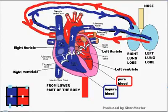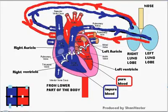The aorta takes blood out of the heart. The pulmonary artery also takes blood out from the heart. The pulmonary vein brings blood towards the heart. The inferior vena cava from the lower part of the body and the superior vena cava from the upper part of the body bring blood into the heart.